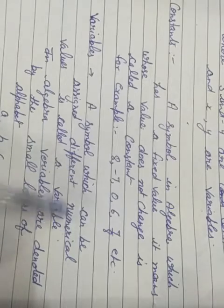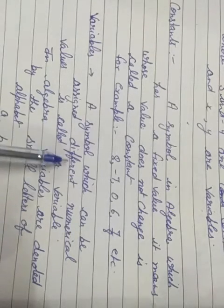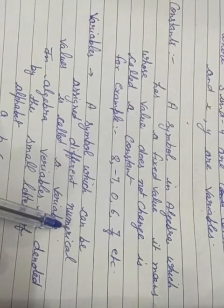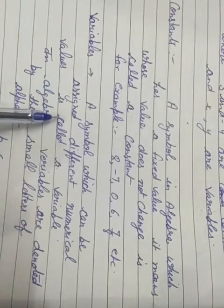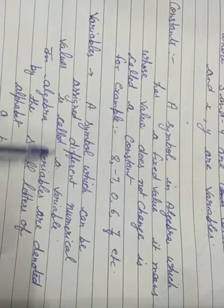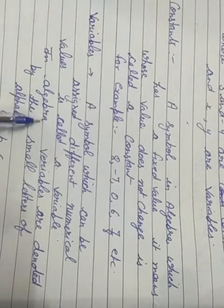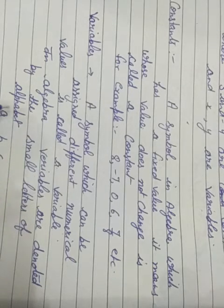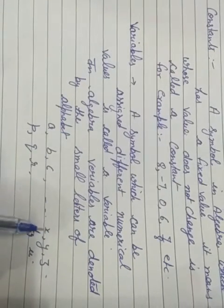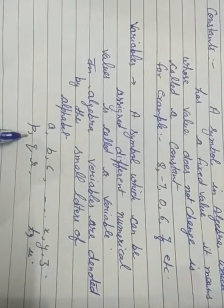Now, variables. A symbol which can be assigned different numerical values is called a variable. In algebra, variables are denoted by the small letters of the alphabet: A, B, C, X, Y, Z, P, Q, R, T, U.